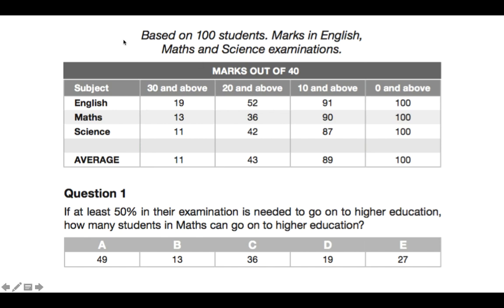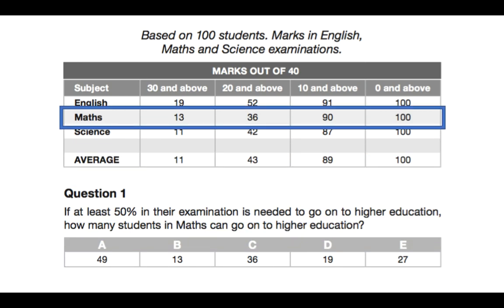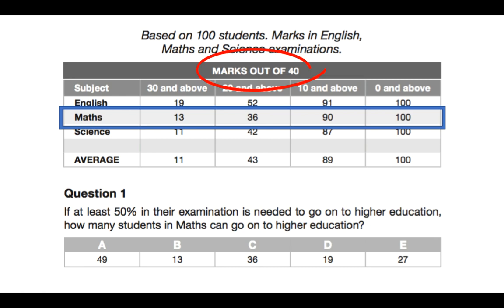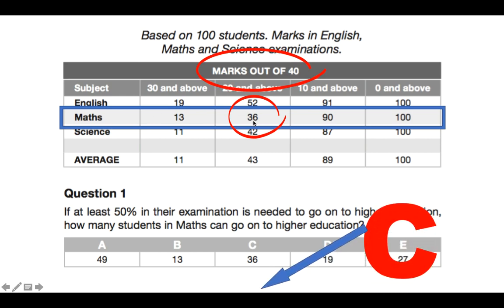The chart at the top says: based on 100 students, these are the marks in English, maths and science examination. You've got English, maths and science on the left, marks out of 40 above, and categories of 30 and above, 20 and above, 10 and above, 0 and above. We focus on the maths section only. We have to work out what is 50% of 40, and that is 20. Therefore, we look at the 20 and above section, and the answer is 36.